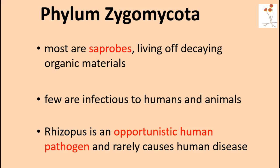Very few of them are actually associated with any pathogenic infections with humans and animals. In fact, that common member, Rhizopus stolonifera, is considered an opportunistic human pathogen, but rarely does it cause any disease. So for the most part, you don't have to worry about that mold growing on your bread.